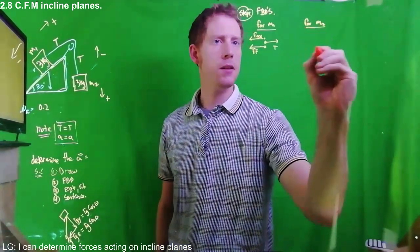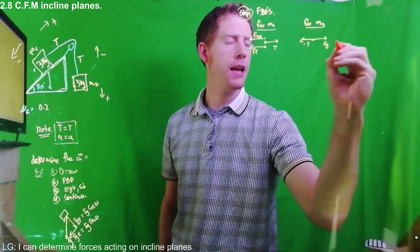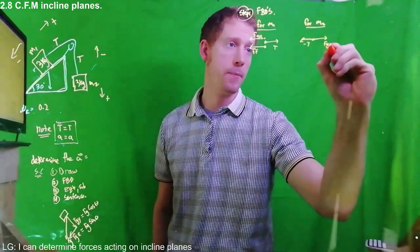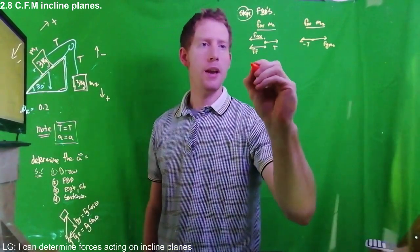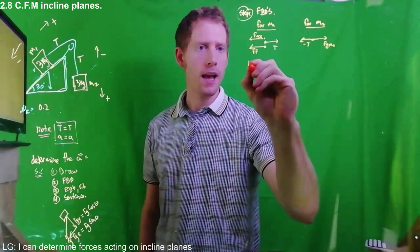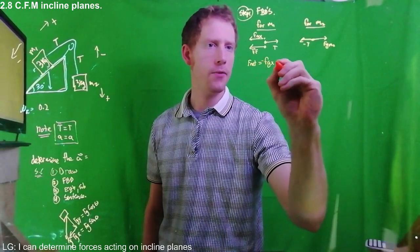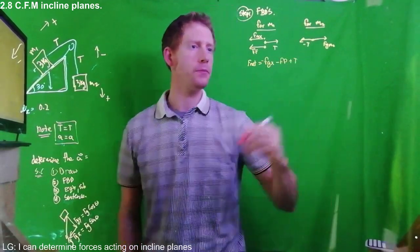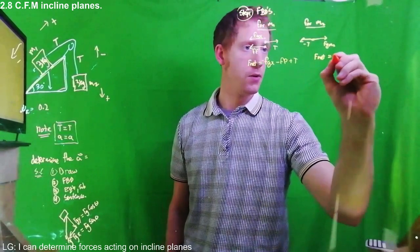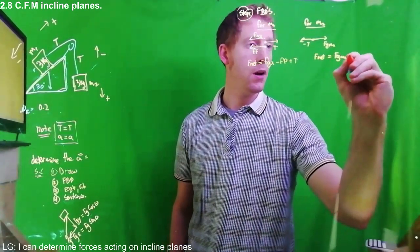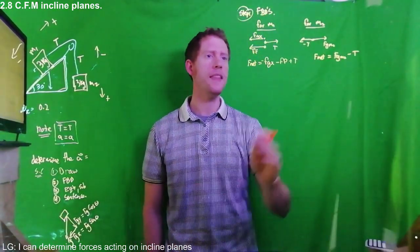For the second mass, we have tension acting upward (negative) and the force of gravity acting downward. Since M2 has a different mass, I'll label it M2. The equation in the X direction for M1 is: F_net = Fg_x − F_friction + T. For M2: F_net = Fg(M2) − T. And these tensions are the same.